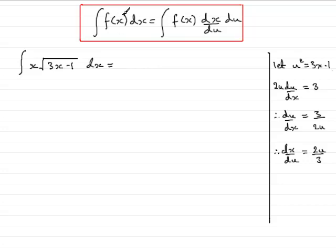So now we're ready to make the substitution. So we write down our f of x which was x times the square root of 3x minus 1. So we have x root of 3x minus 1, and then we have dx du which is 2u over 3. And then we have the du integrated with respect to u.